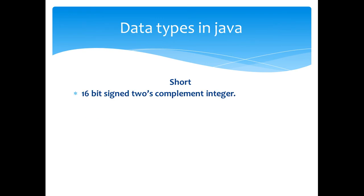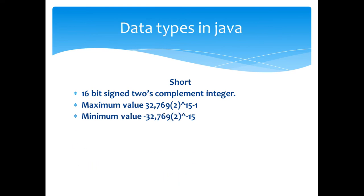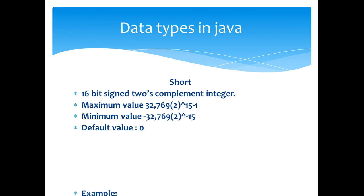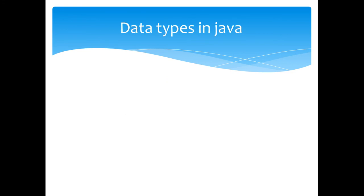The second type is the short type. It is a 16-bit signed two's complement integer. Maximum value is 32,767 (2 raised to 15 minus 1). Minimum value is minus 32,768 (2 raised to minus 15). The default value is 0. Example: short a is equal to 3000, short b is equal to 2000.